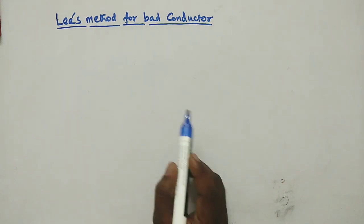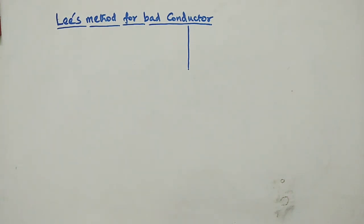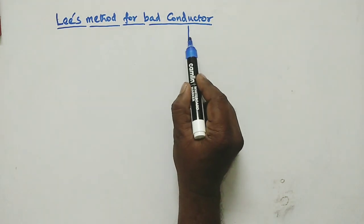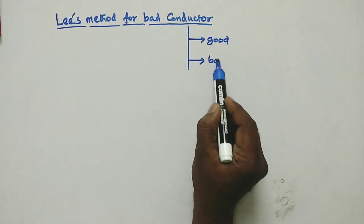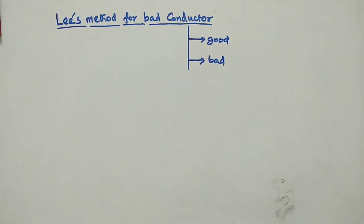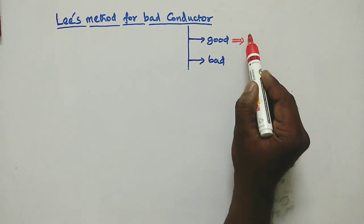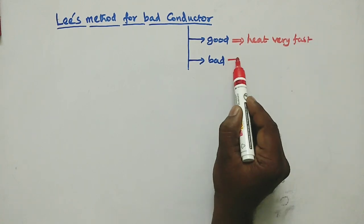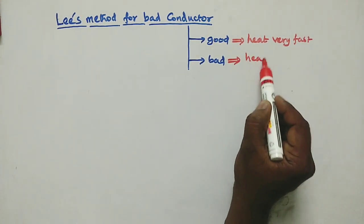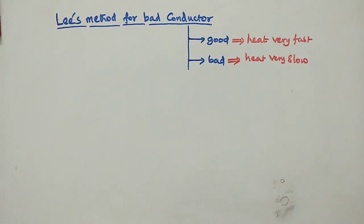Conductor means thermal conductor. There are good conductors and bad conductors. What is the difference between these two? Good conductors conduct heat very fast, and bad conductors conduct heat very slowly. This is the difference between a good conductor and a bad conductor.